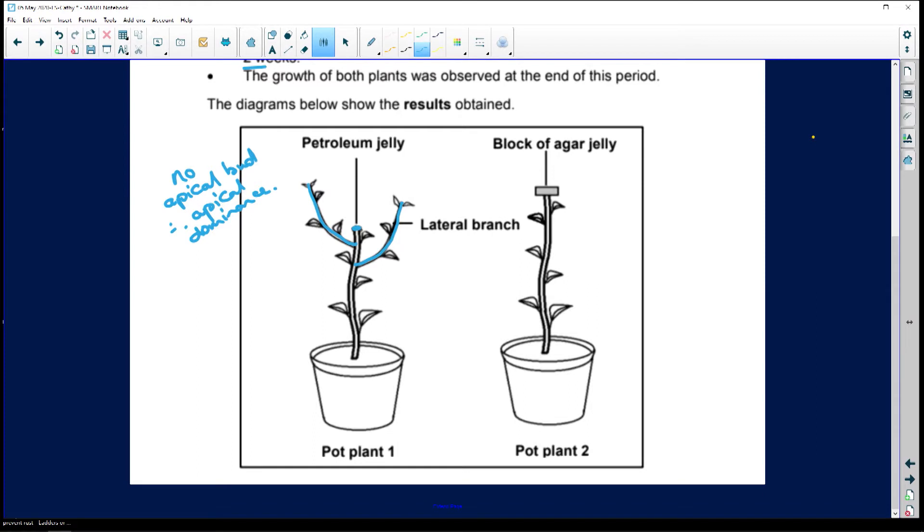It grows lateral branches. And here you can see, it's got its little lateral branches growing from the sides. This is how they make hedges. When you cut the tops off the hedge all the time, the sides grow nice and thick. Here your block of agar jelly had your auxins, because they had diffused into the agar jelly. And what happens, it grew longer.